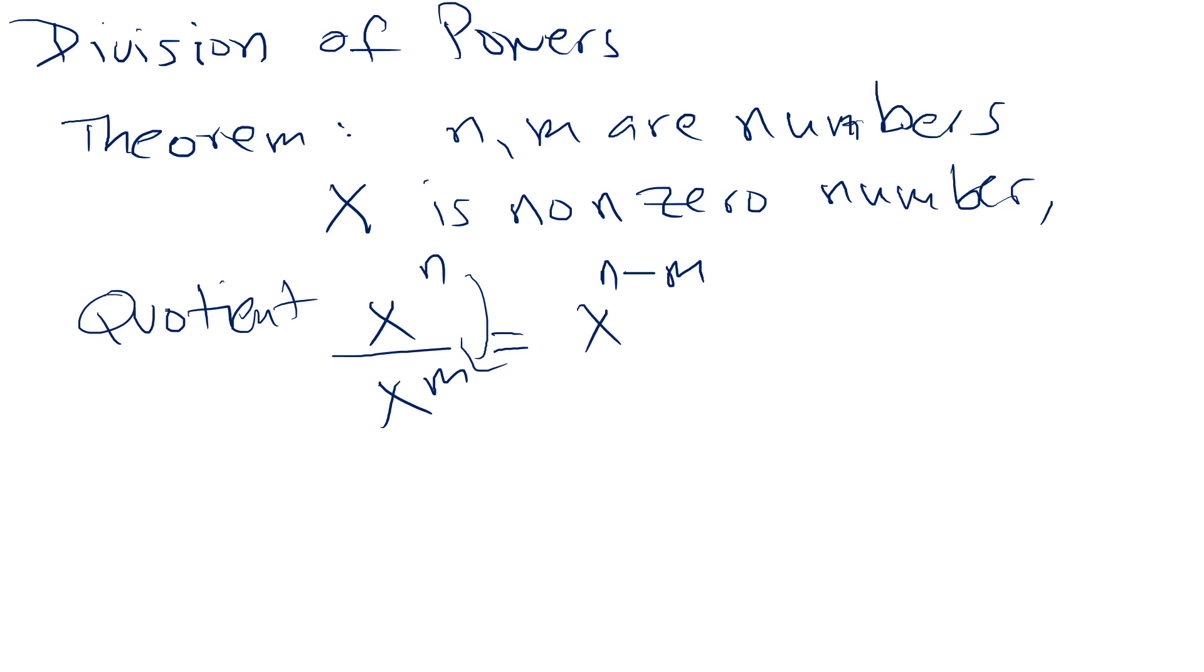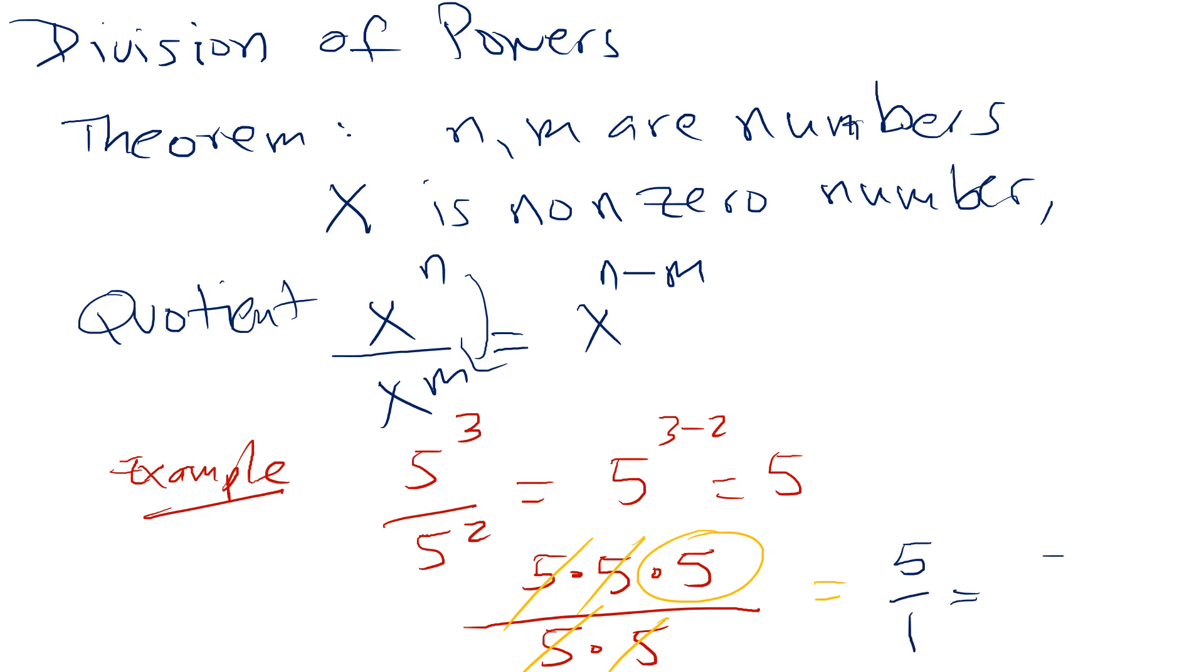An easy example to show it is if you have 5 to the power 3 over 5 to the power 2. This equals 5 to the power 3 minus 2, which is 5. The mechanics: 5 to the power 3 is 5 times 5 times 5, and 5 squared is 5 times 5. You cancel one, cancel the second, and you have left 5 over 1, which is 5. If the top is lower than the bottom but it's still the same base, then you will end up with a negative exponent.